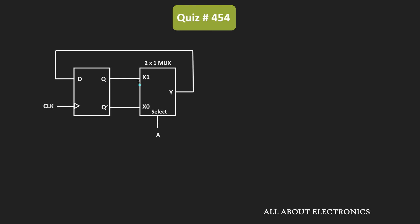Here, x1 and x0 are the inputs of the multiplexer and y is the output. Depending on the selection input A, any one of the two inputs will get connected to the output. This output y is connected back to the D input.